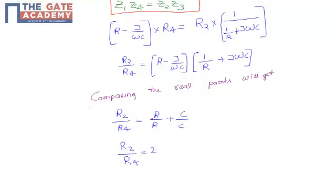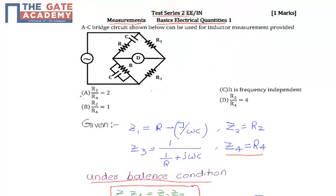After solving, we get the value of R2/R4, which is 2, which is option A.